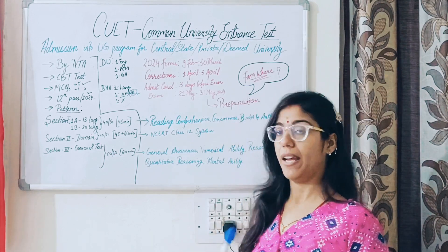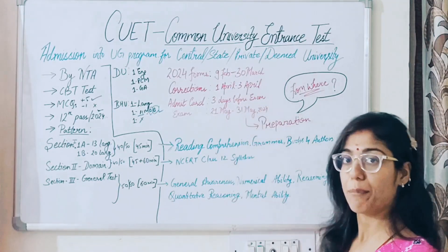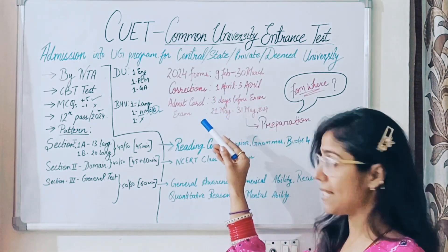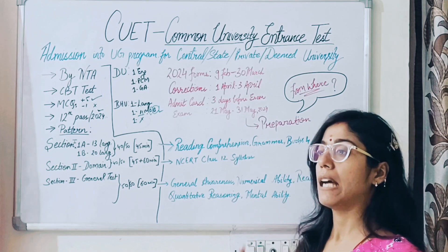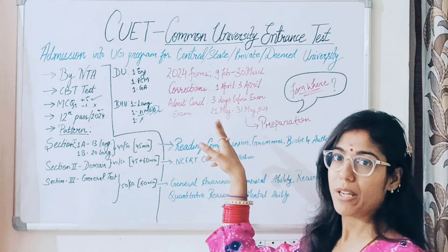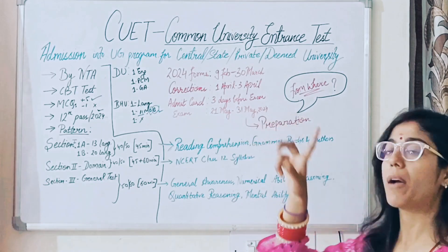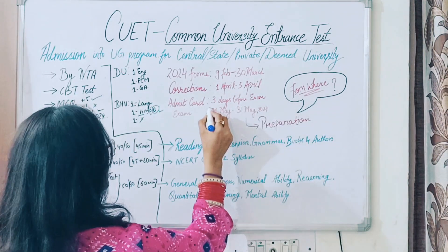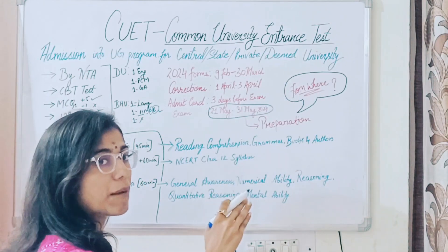Ab baat karte hain exam kab hai. 2024 ki dates abhi declare ho chuki hai. 9 February se 30 March tak aapke forms out ho jayenge. Correction ke liye 1 April se 3 April. Admit card aapka exam ke thoda pehle — at least ek hafte pehle — aata hai. Yaha par 3 days before bhi admit card aa sakta hai. Exam ki dates note down karo: 21st May se 31st May aapke exam ki dates aa chuki hai.